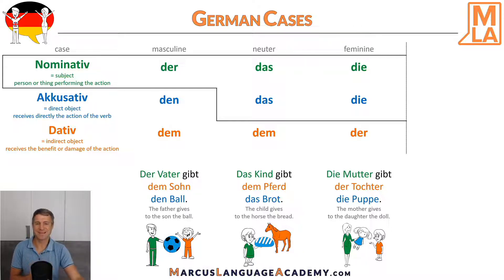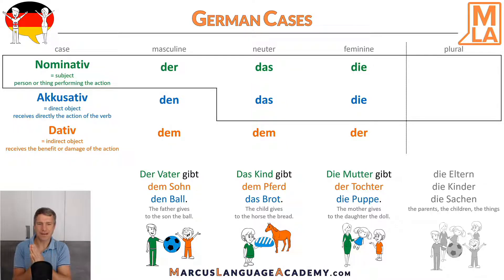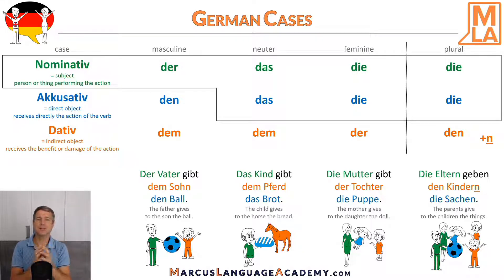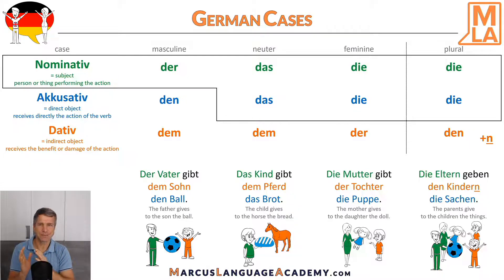Fortunately, there is only one option in the plural. Whether masculine, feminine, or neuter, the plural article is always 'die'. For example: die Eltern, die Kinder, die Sachen. Die Eltern geben den Kindern die Sachen — the parents give to the children the things. There is no change in the nominative and accusative case; it remains 'die'. But in the dative case, the article 'die' becomes 'den'. We need to be a little careful because nouns in the dative plural mostly add an 'n' at the end, unless the plural form already ends in 'n' or 's'.